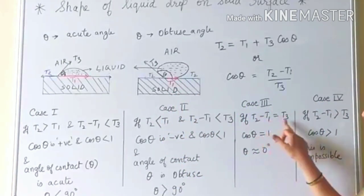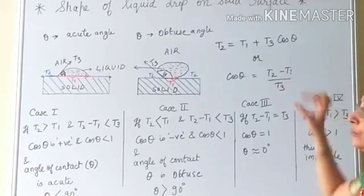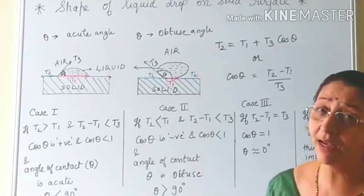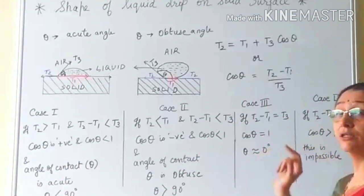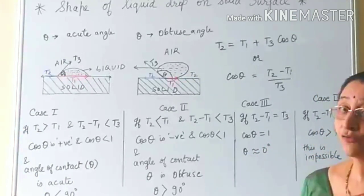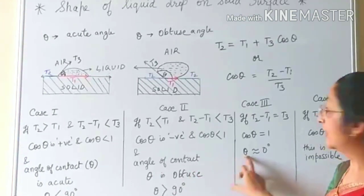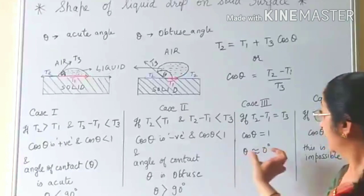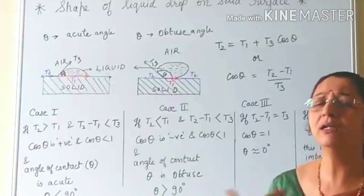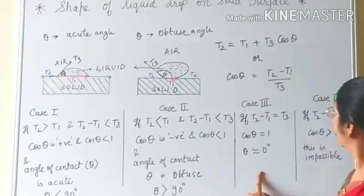Case 3: If T2 minus T1 is equal to T3, then the numerator equals the denominator, and they cancel. So cos θ = 1, which gives θ = 0 degrees. The liquid completely wets the solid surface with a contact angle of zero.